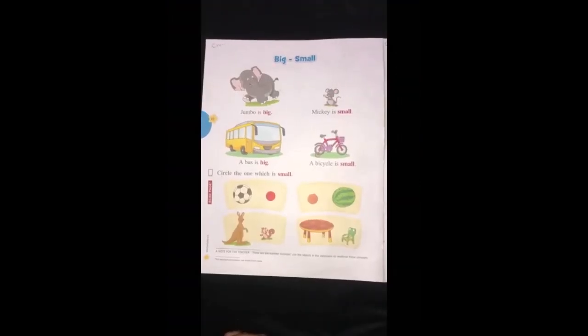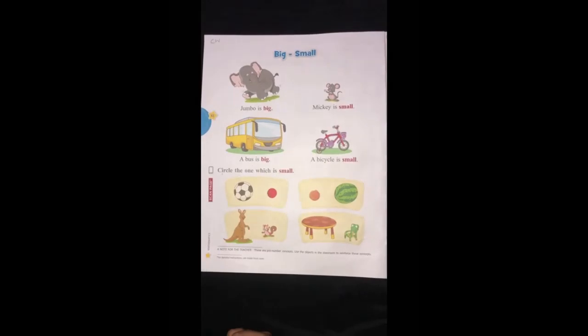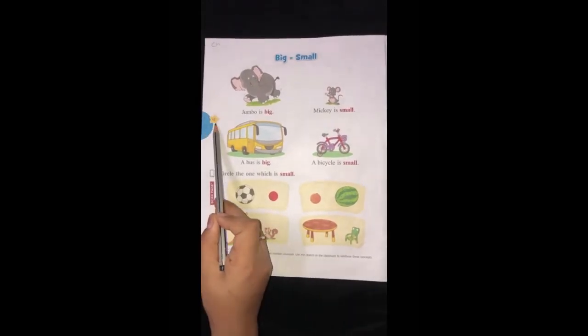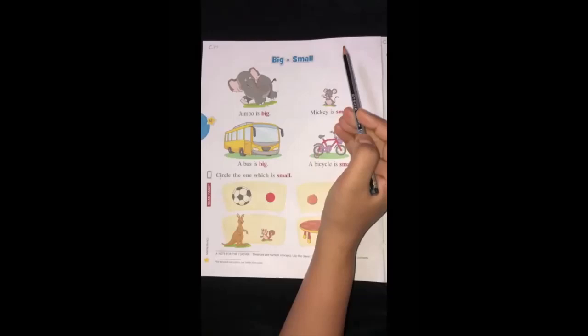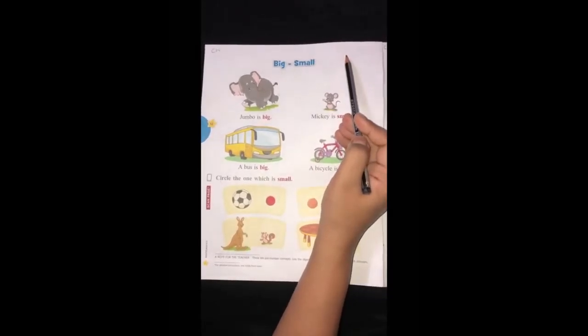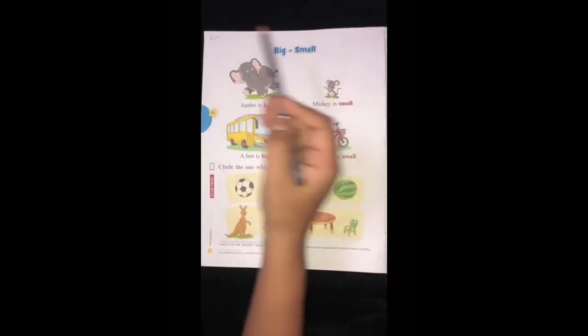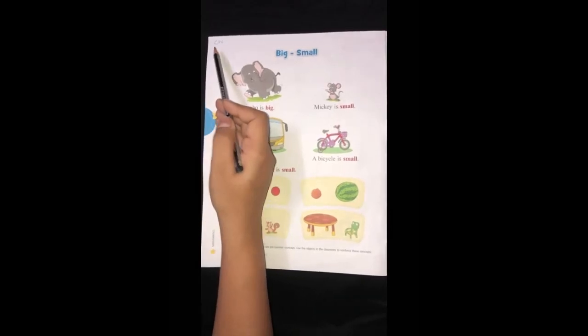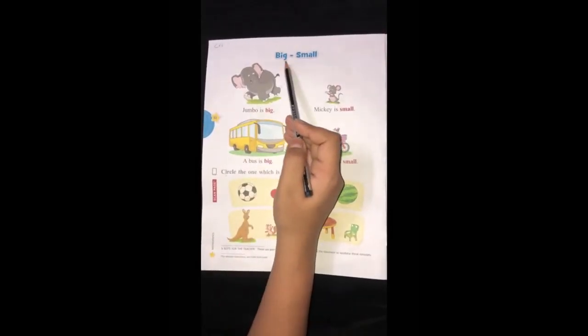Okay children, now let's start with today's work. Let's open page number 62 of Pearl Book. And parents are requested to kindly mention the date here and class work. Topic, big and small.